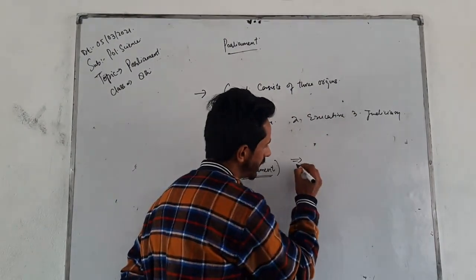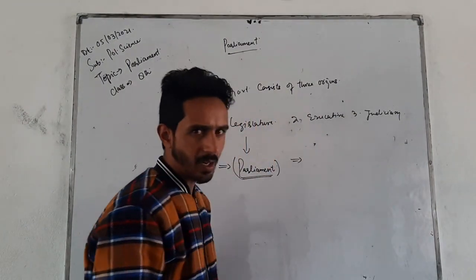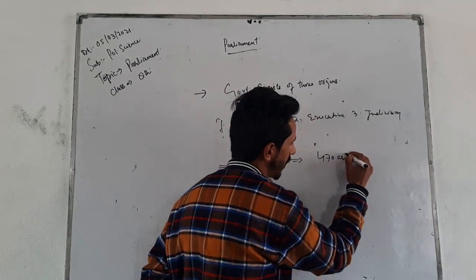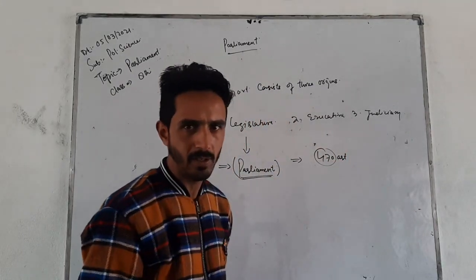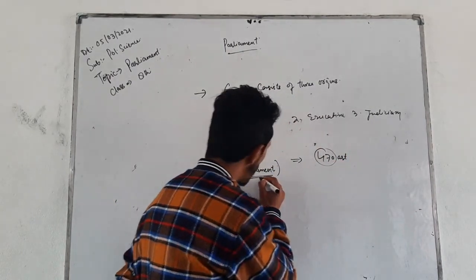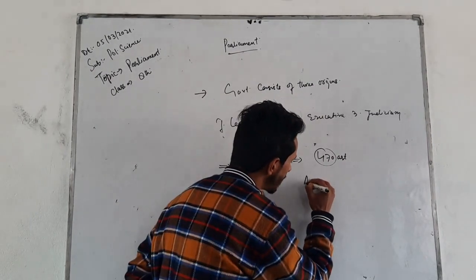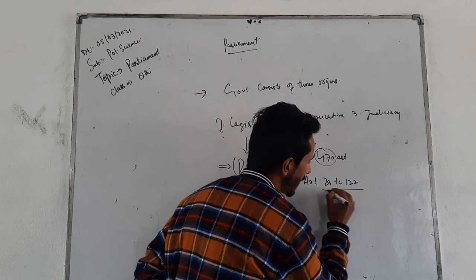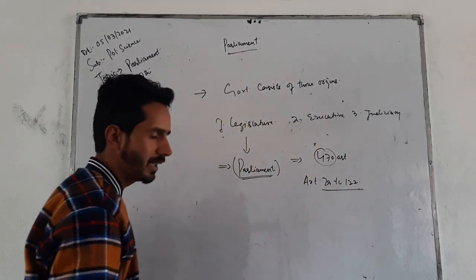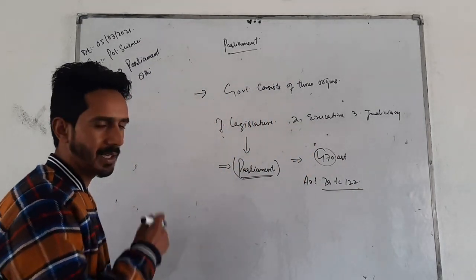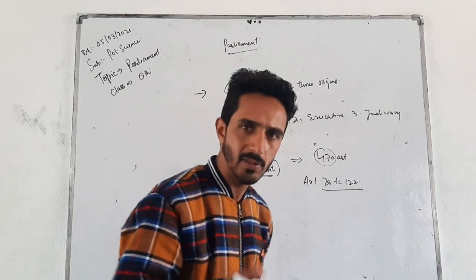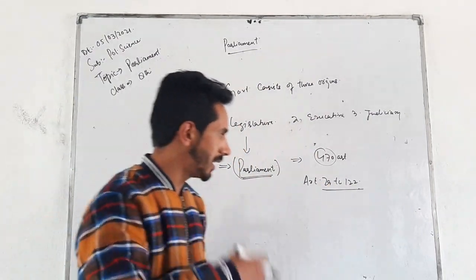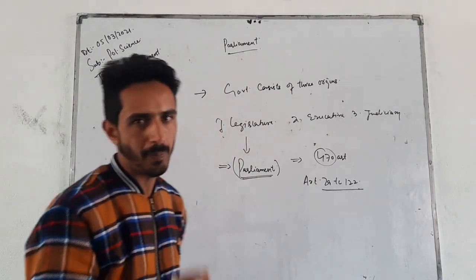When we look at the Constitution of India, there are presently 470 articles. When we talk about Parliament, Article 79 to Article 122 of the Indian Constitution deals with Parliament — its powers, functions, superintendence, tenure, and other functions.